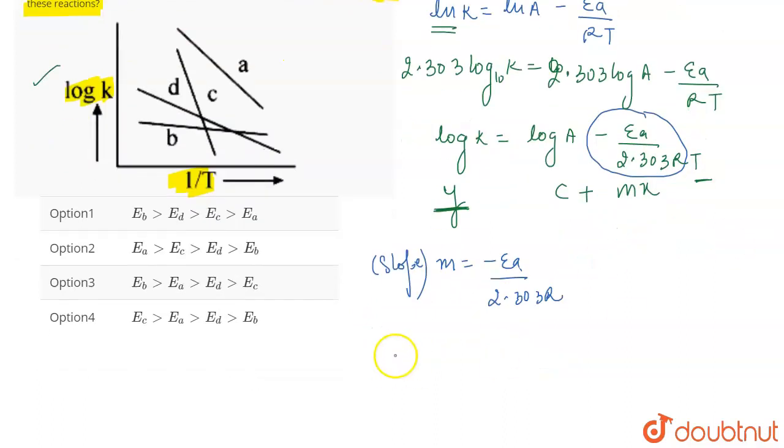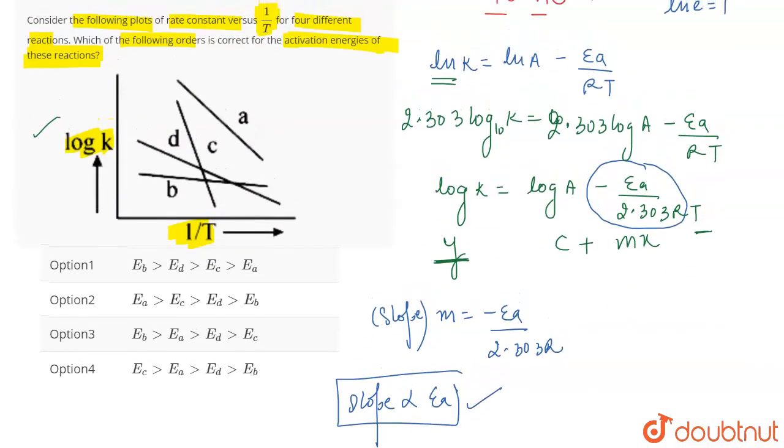So from here, what do you understand? That the slope of the curve is directly proportional to the value of activation energy. More is the slope, more will be the activation energy.